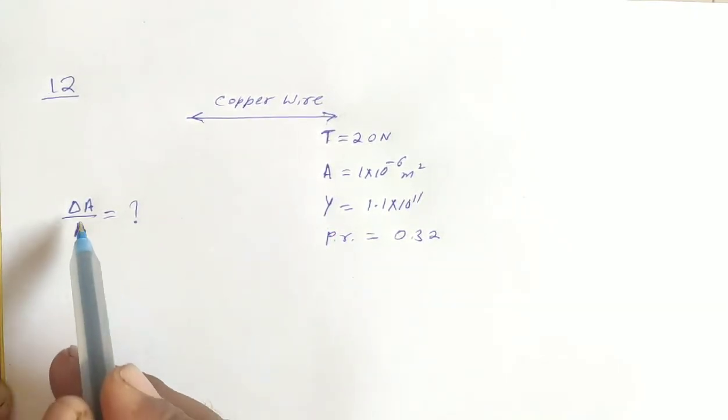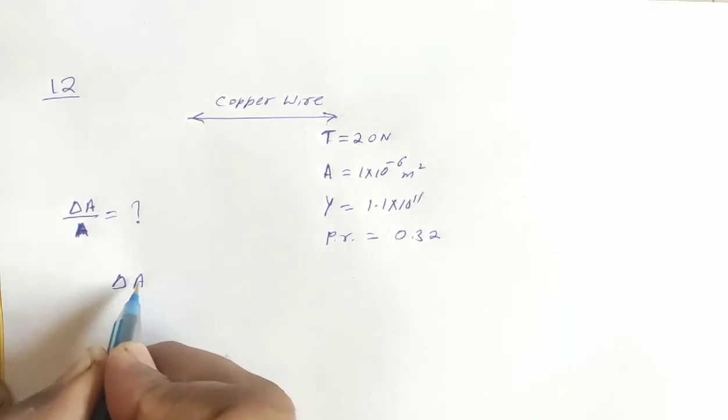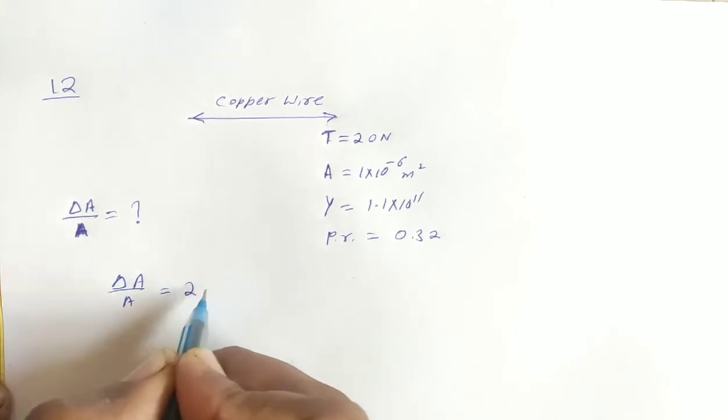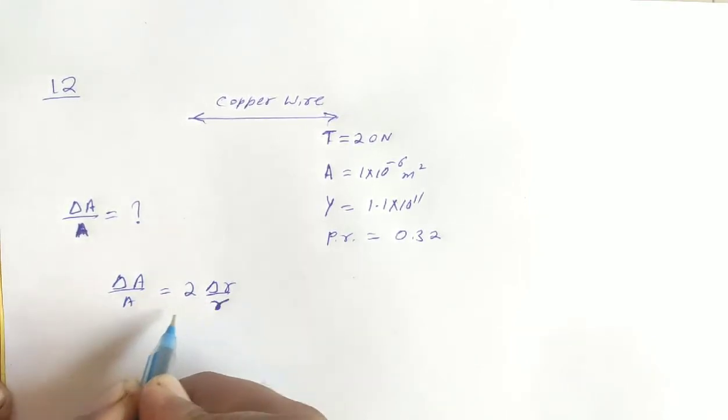So here we have the data and we have the relative change in area. Right. And here we have the hint. Relative change in area is equal to 2 times of relative change in radius. This is our second chapter.